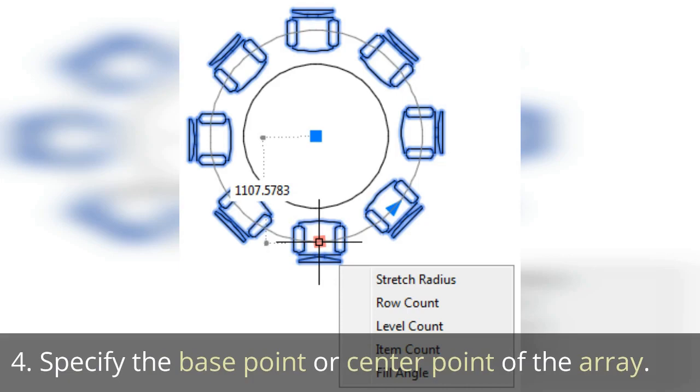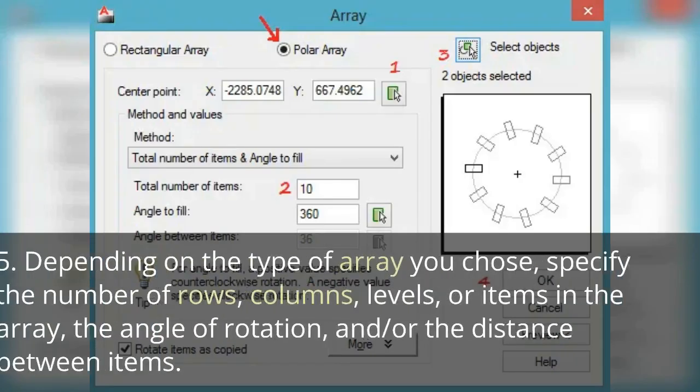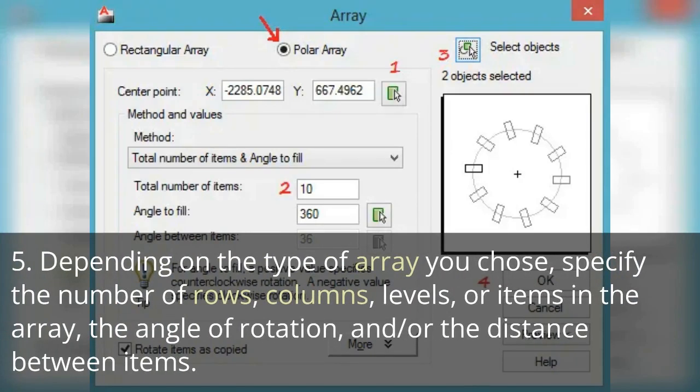Fourth, specify the base point or center point of the array. Fifth, depending on the type of array you chose, specify the number of rows, columns, levels, or items in the array, the angle of rotation, and or the distance between items.